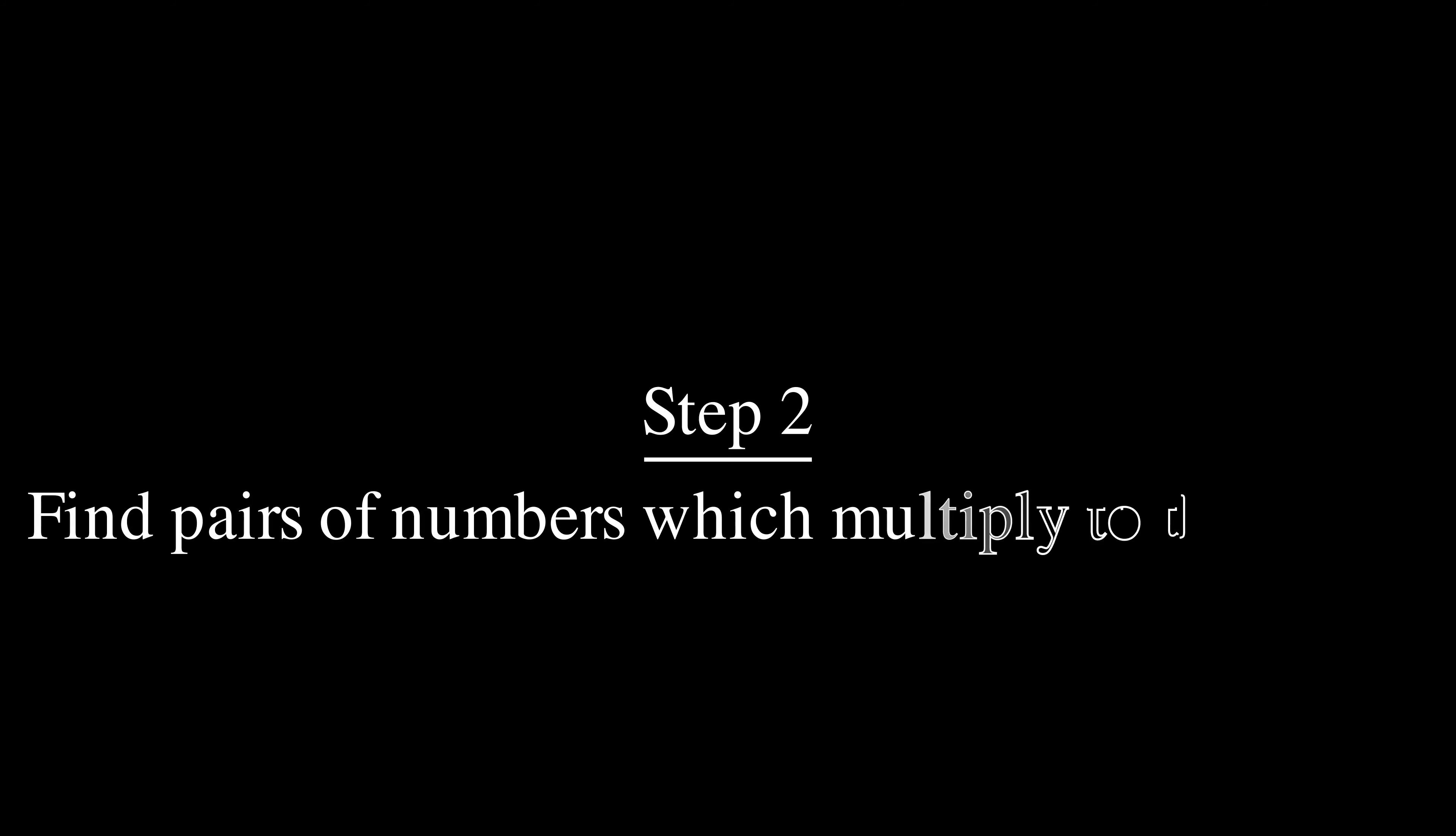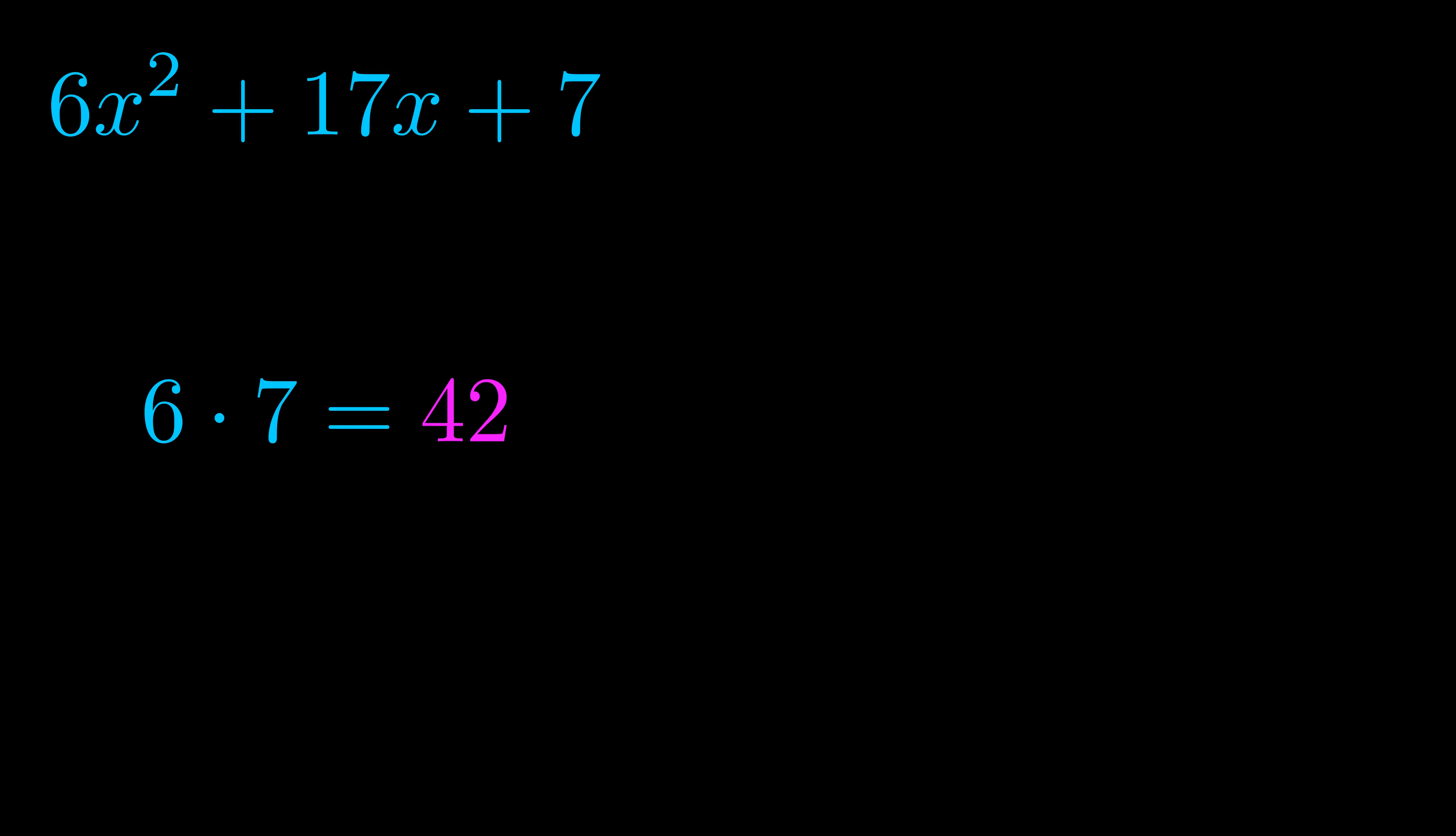Step two is to try to find all of the pairs which multiply to this number. Now turns out you don't really need to find all of them but go ahead and write down as many numbers as you can that multiply to the magenta value for now. Pause the video and resume when you're ready to continue. Okay here's what I came up with.